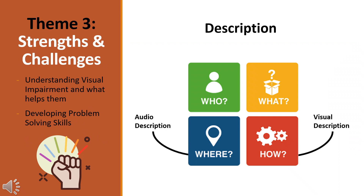The next theme focuses on young adults knowing both their strengths and challenges. This involves firstly understanding their visual impairment and being able to explain it to others, and further knowing what aids their vision, taking care of their equipment and glasses, knowing about their strengths and challenges, learning to problem-solve, managing risk-taking and being able to answer questions about their vision. This can also be supported when young adults understand what is happening in their environment, particularly as they may not be able to see what is taking place. This can be achieved through additional description of visual information to understand the content and context and provide fuller access to society.